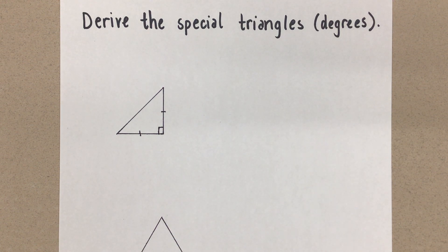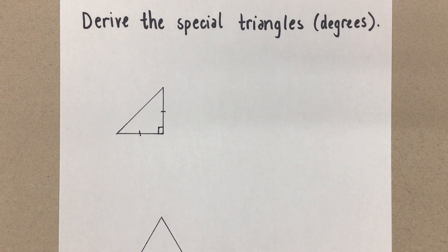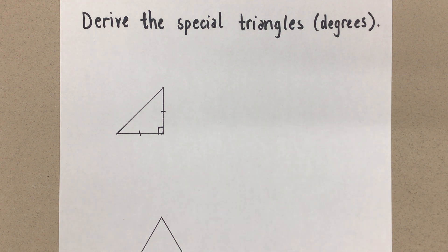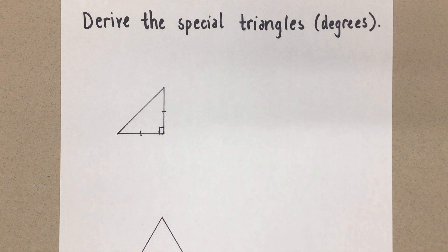Hi everyone, Mrs. A here. Today I am going to show you how we come up with the two special right angle triangles that we use a lot in trigonometry. The reason we need the special triangles is to get the exact value for certain special angles. We're going to do this today in degrees, and the special angles that we can get from these triangles are 30 degrees, 45 degrees, and 60 degrees. I will show you how we then use the special triangles to get the exact values.